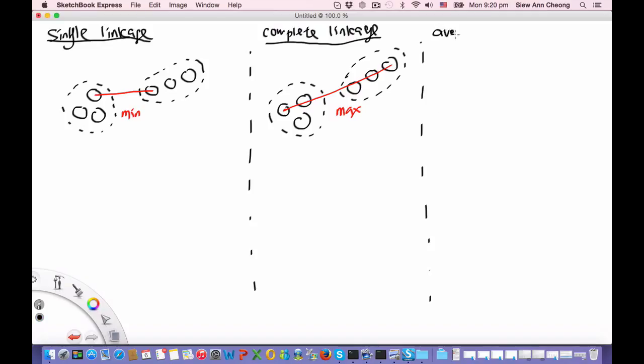Then finally, there is the other common algorithm, which is the average linkage algorithm, where the distance between the two clusters is defined as the average distance between the two clusters.